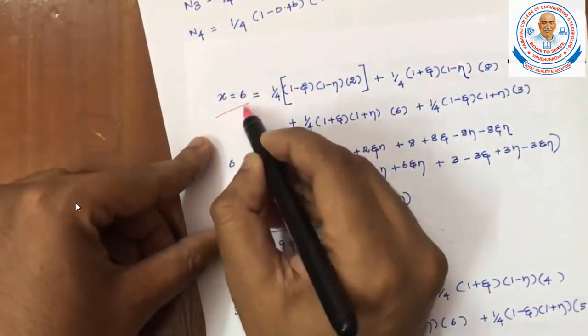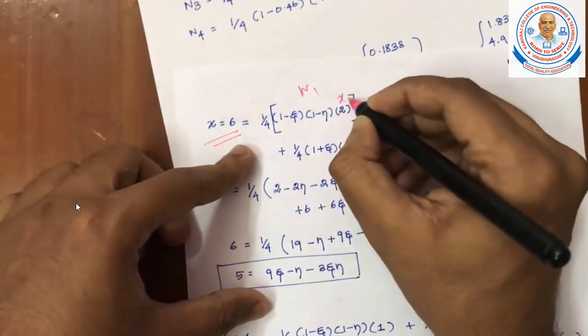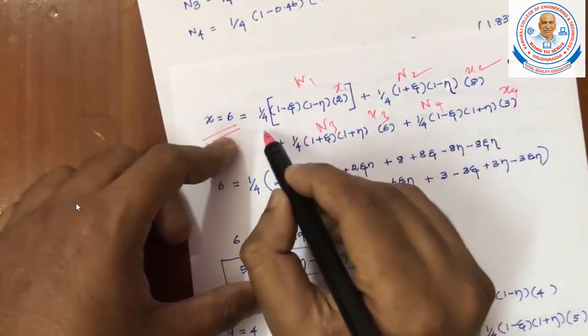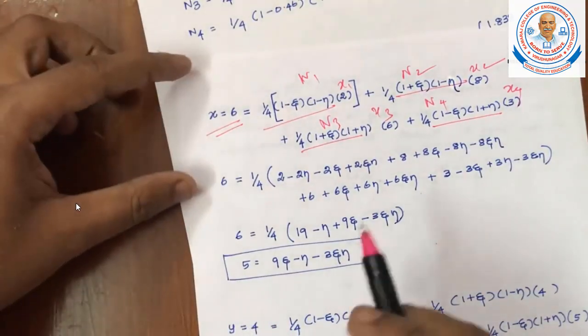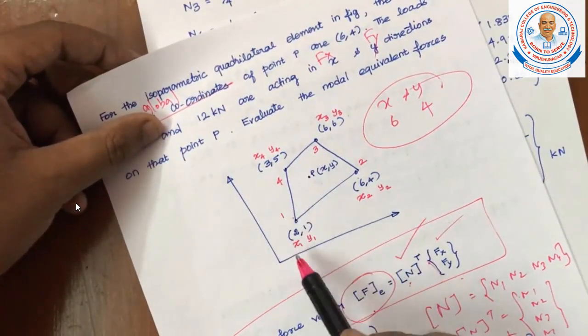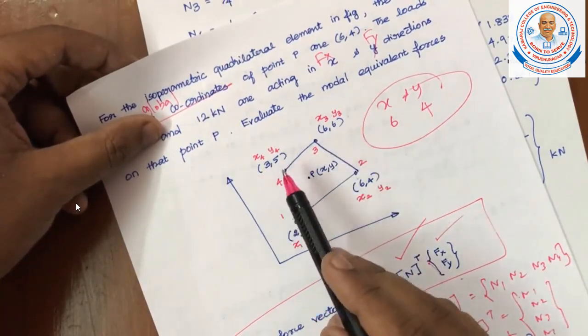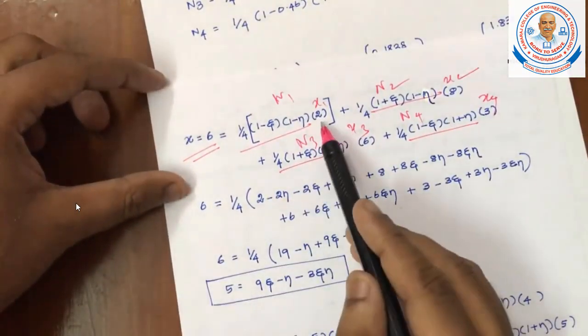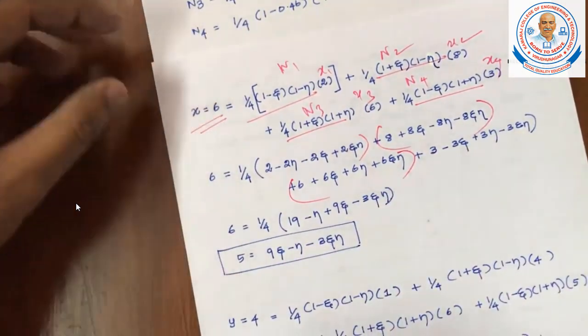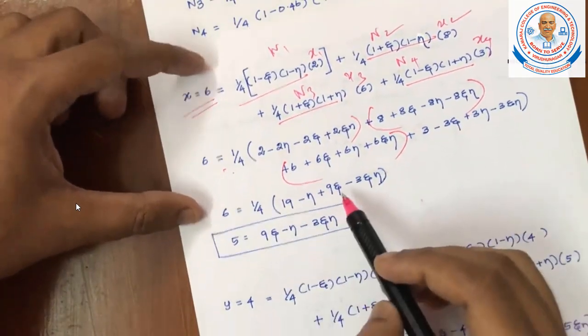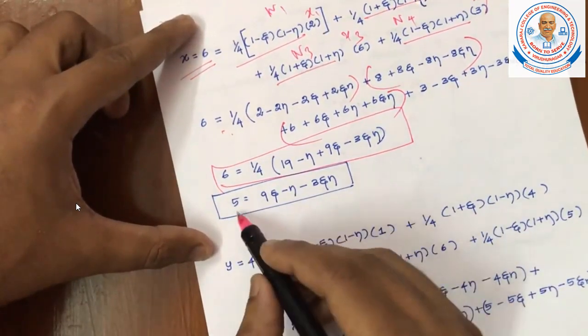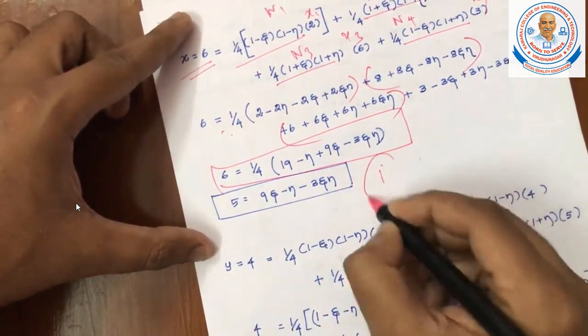In the problem, X is equal to 6, that is given. So X equals X1*N1 plus X2*N2 plus X3*N3 plus X4*N4. In the question, all are given: X1, Y1, X2, Y2, X3, Y3, X4, Y4 is given. I will substitute the X terms. The X1, X2, X3, X4 values into the equation. If you cross multiply, you'll get algebraic equations. If you solve and simplify, you will get the final equation. That is, 0 equal to 9 epsilon minus theta minus 3 epsilon theta. Consider it as equation number 1.